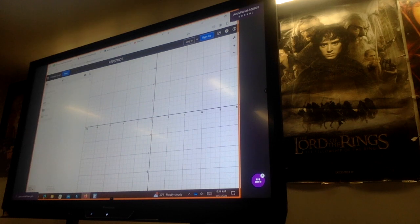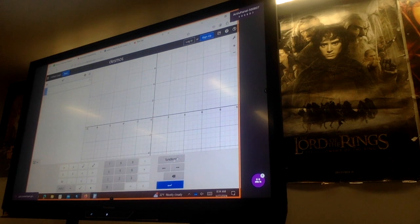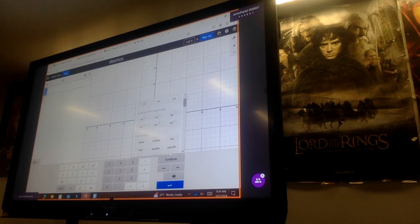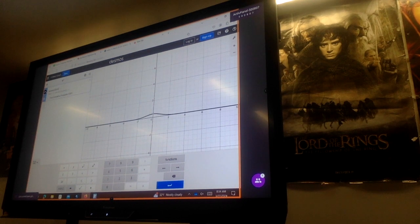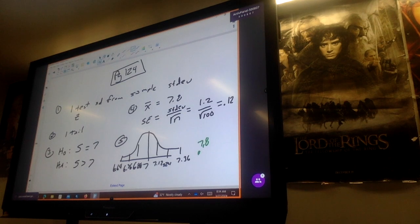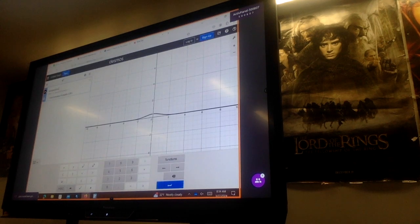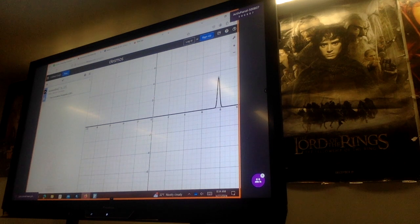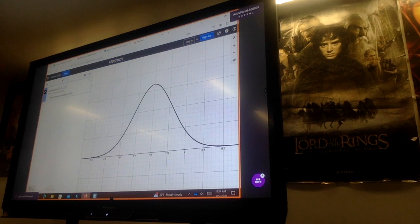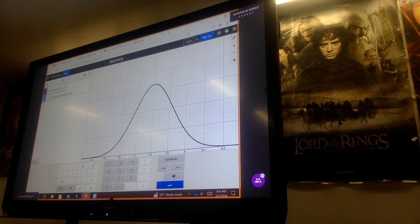We should be able to do that. Cool, all right decimals. So we can do a normal distribution. Normal distribution, we know we have a 7.8 and a 0.12. Here's our normal distribution based on that. Calculate the p-value. Oops, bless you. This is supposed to be 7.0, sorry.